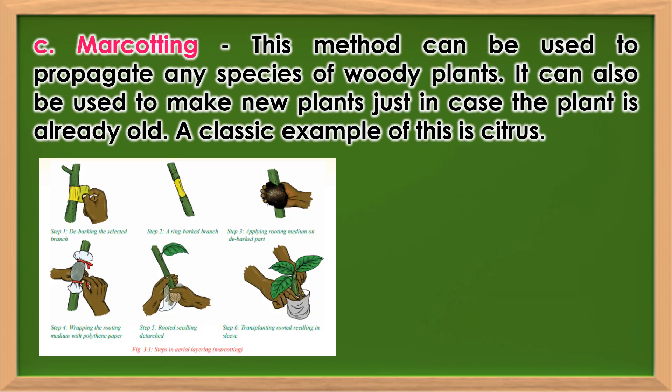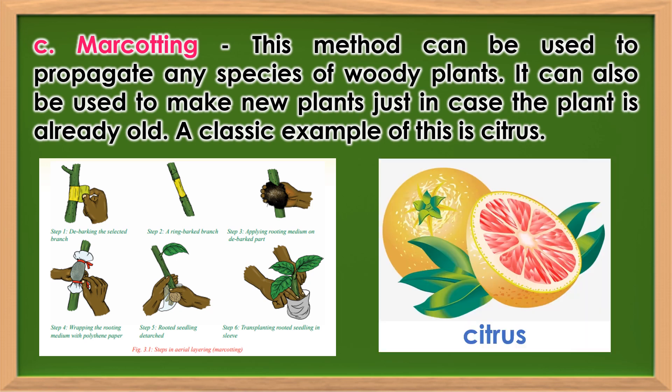Marcotting: This method can be used to propagate any species of budding plants. It can also be used to make new plants in case the plant is already old. A classic example of this is citrus.